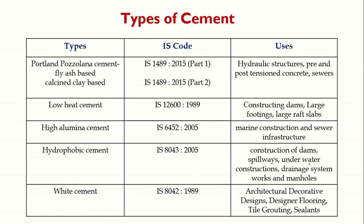White Cement, as the name suggests, is white in color. The IS code is IS 8042:1989. It is prepared from raw materials which are free from iron oxide, because the color of cement is due to iron oxide. To make white cement, iron oxide is excluded from the raw materials.